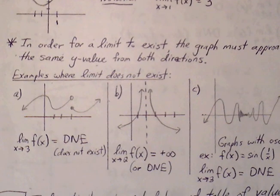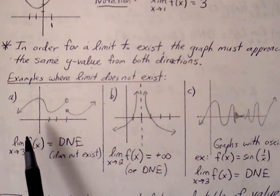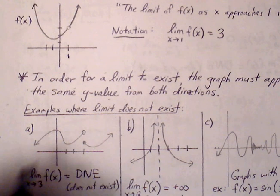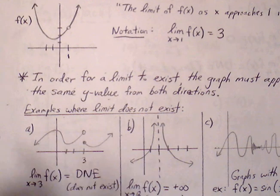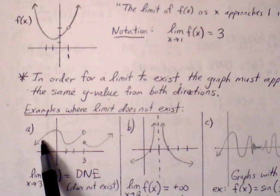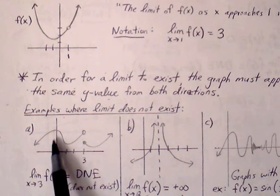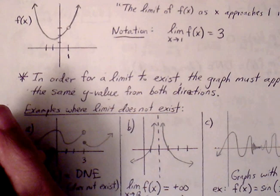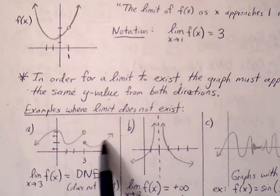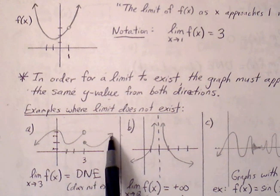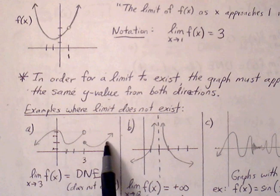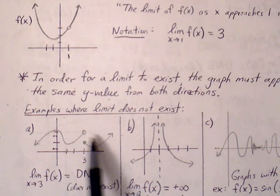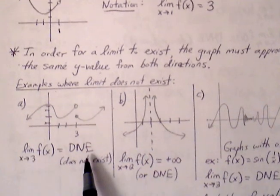Here are a couple of instances where the limit does not exist. Comparing the first graph to this one, as x approaches 3, the left branch is approaching a y-value of 4, but from the right branch, as we move towards an x-value of 3, the y-value is approaching 2. There's no agreement between the left branch and the right branch, so we say that the limit does not exist.